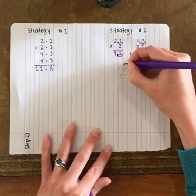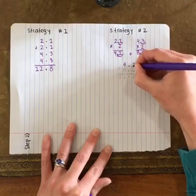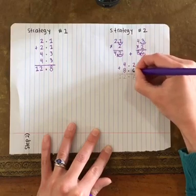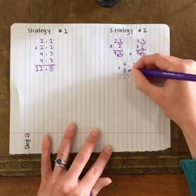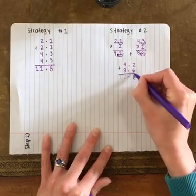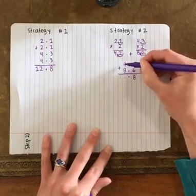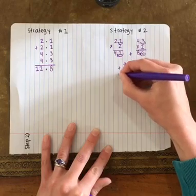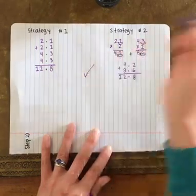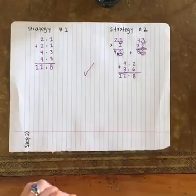I'm going to add up both of those products to find my perimeter. Bring down the decimal point. 6 plus 2 is 8. I forgot my line there. 8 plus 4 is 12. 12 and 8 tenths. 12 and 8 tenths. That helps me check my work.